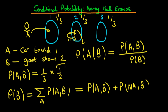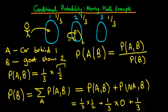We already know the first term is one third times one half, giving one sixth. For the second term, not A occurs in two cases. First, if the car is behind door two — probability one third — event B never occurs, so this contributes one third times zero. Second, if the car is behind door three — probability one third — the host must open door two, contributing one third times one. So the denominator is one sixth plus zero plus one third, which equals one half.